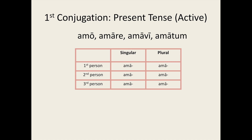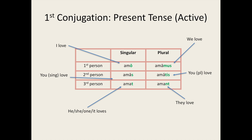Now let's have a go at conjugating one of these verbs in the present tense, using 'amo' as the example. First we take the second principal part, we remove the -are ending to get the present tense stem, and then we add on our endings: -o for first person singular, -s for second person singular, -t for third person singular, -mus for first person plural, -tis for second person plural, and -nt for third person plural. This gives us: amo — I love; amas — you love (singular); amat — he, she, it loves; amamus — we love; amatis — you (plural) love; amant — they love.